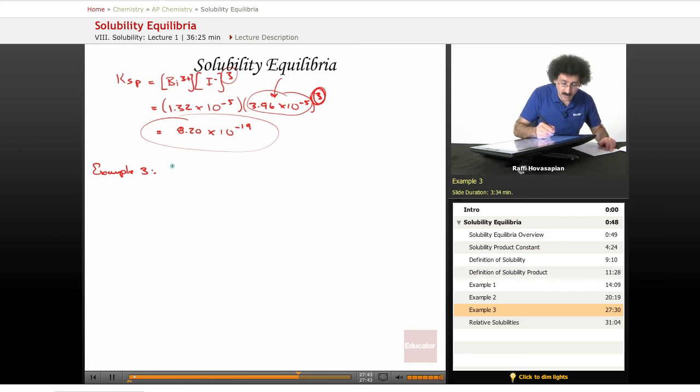Okay, so this one we're going to go in reverse. We gave you the solubility when we found the Ksp, now we're going to give you the Ksp.